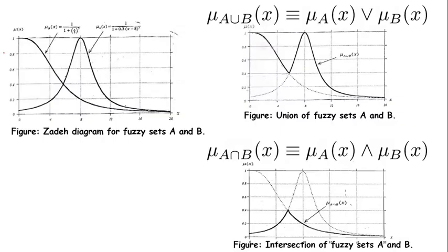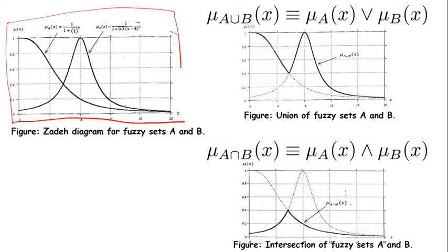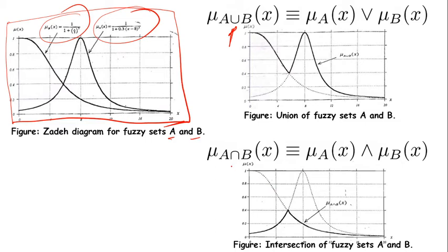Here you can see the universe of discourse for two fuzzy sets A and B. This is the membership function of B and this one is the membership function of A. If I apply the union operator, it considers only the maximum of the membership function values. If I apply the intersection operator, it considers only the minimum of the membership function values, which means only this overlapping portion.